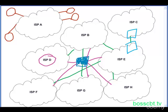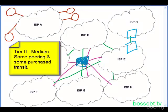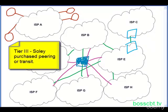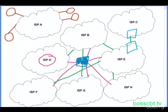A tier two ISP is slightly smaller. They have some peering arrangements where they and another ISP — like C and E — exchange traffic over a peering point, but they also have to purchase some connectivity as well, perhaps from a larger ISP. Finally, tier three ISPs are smaller than tier twos and, for the most part, have to purchase all of their peering arrangements. So they have some extra costs, but it enables them to connect their clients to the rest of the world.